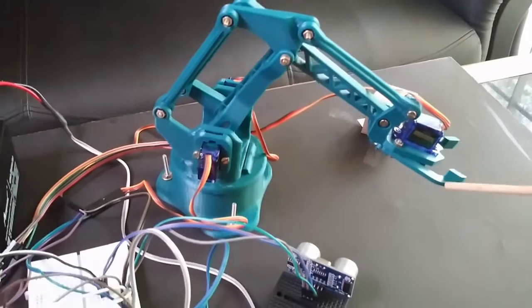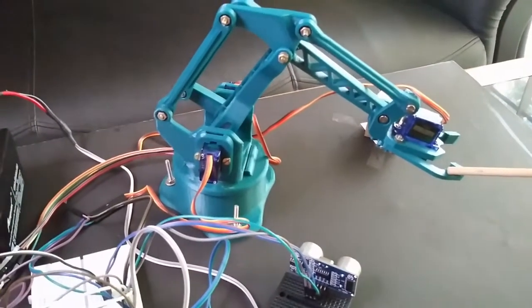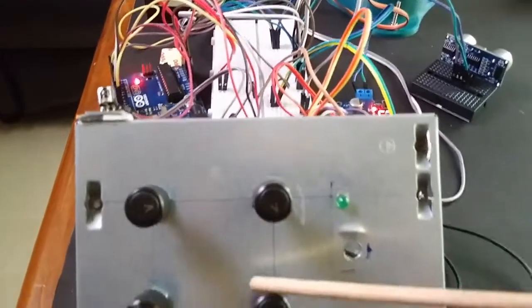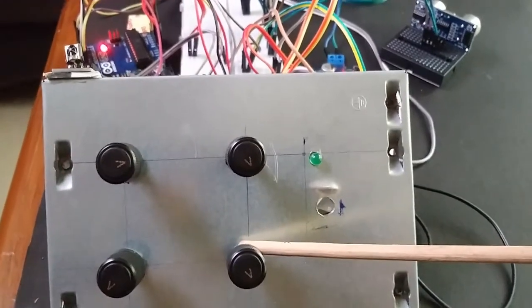This is my robotic arm with all four servos connected. There are four potentiometers here. By turning them I can move each section of the robotic arm.